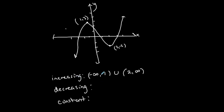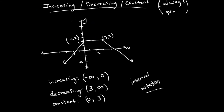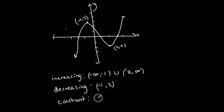Where is this function decreasing? There's only one interval — going down from when x = −1 to when x = 2, written as the open interval (−1, 2). Is this function constant anywhere? It is not — there's no horizontal line like in the previous example. So there is no interval where this function is constant; the answer is none.